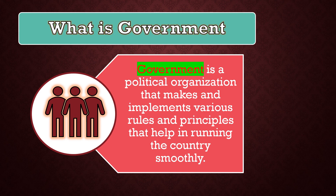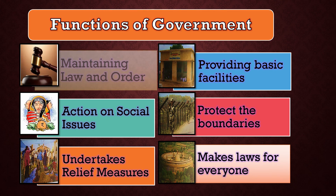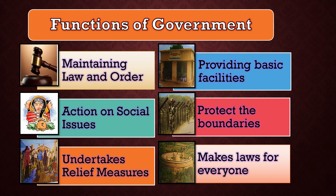Let's know about the functions of government — what work does the government do, what functions does it perform? The first function is maintaining law and order. It ensures law and order within the country. Government performs many kinds of functions in our daily life. Maintaining law and order is the first — it keeps law and order within the country and society. It makes and implements laws for this purpose. It also intervenes in crime cases through courts, and courts are an essential part of government.